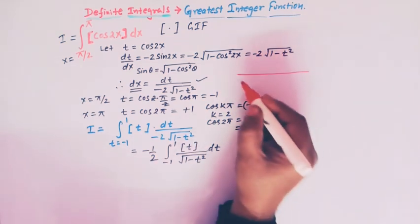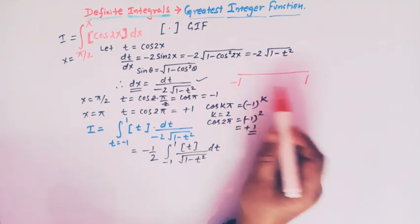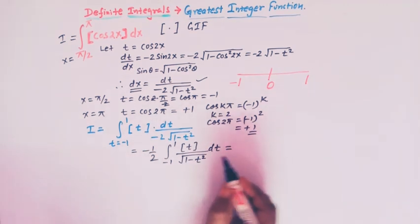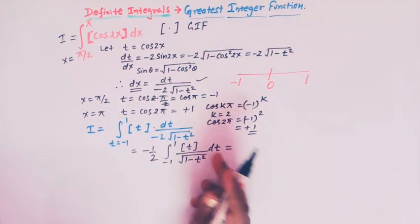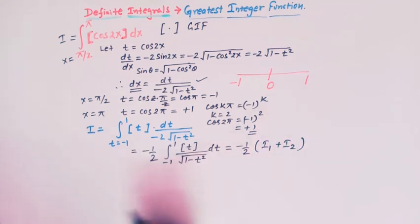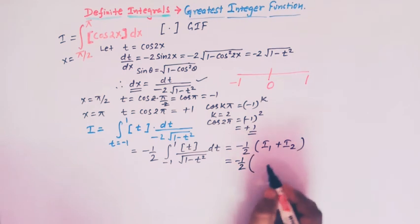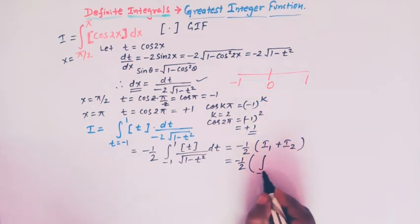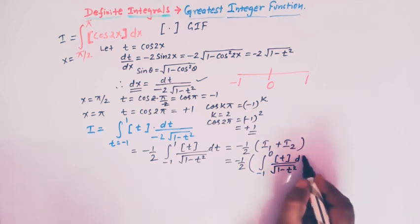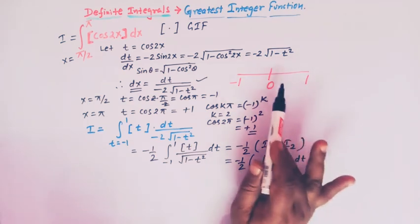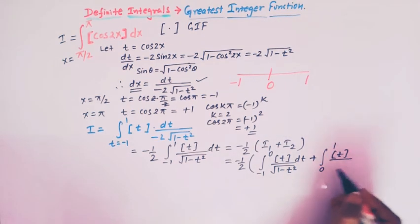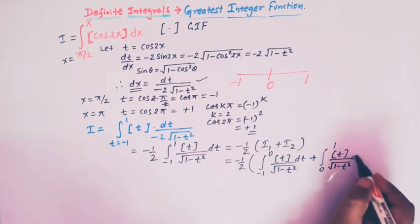As t varies from −1 to 1, the integer 0 lies within this interval, so we break this integral into the sum of two integrals: I = −(1/2)(I₁ + I₂), where I₁ = ∫₋₁⁰ ⌊t⌋ / √(1 − t²) dt and I₂ = ∫₀¹ ⌊t⌋ / √(1 − t²) dt.